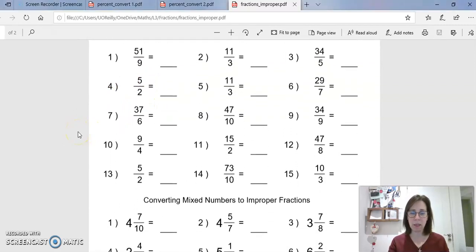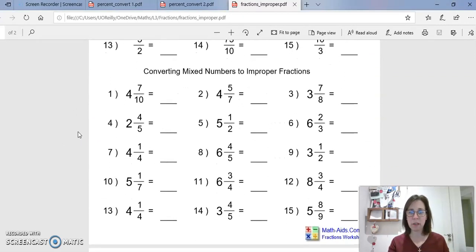The bottom part then is converting mixed numbers to improper fractions. In this case you've got 4 and 7 tenths. So how many tenths are you going to have in 4? You're going to have 10 tenths is 1, another 10 tenths is 2, another 10 tenths is 3, another 10 tenths is 4, plus the 7. So that's going to be 47 over 10. You can do it that way, or you can just go, well, 10 by 4 is 40 plus the 7 is 47. The Maths Antics video actually explains that quite well. So have a look at that and then give those a try.